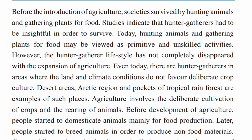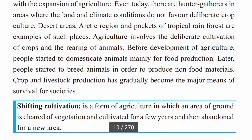Before the development of agriculture, people started to domesticate animals mainly for food production. Later, people started to breed animals in order to produce food materials. Crop and livestock production has gradually become the major means of survival for societies.